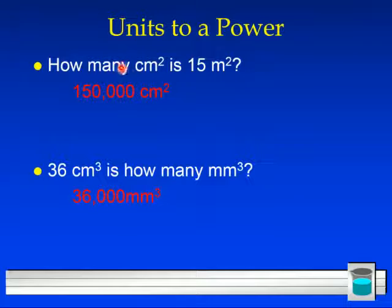But here are some for you that you can actually know the correct answer. Double check your procedure. How many centimeters squared is 15 meters squared? Well, it's 150,000 centimeters squared. 36 cubic centimeters is how many millimeters cubed. Well, it's 36,000 millimeters cubed. Again, attempt those calculations. Make sure that you are setting up your conversions correctly using this feedback loop.